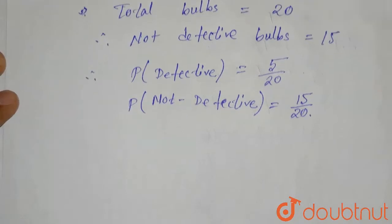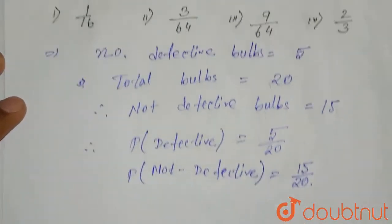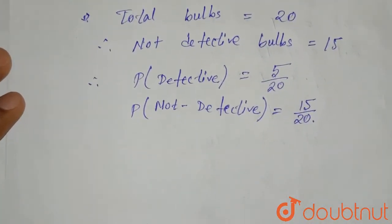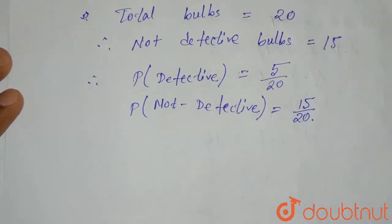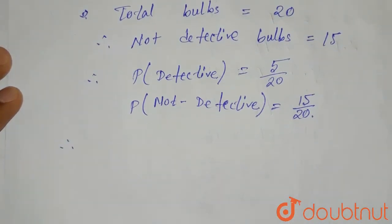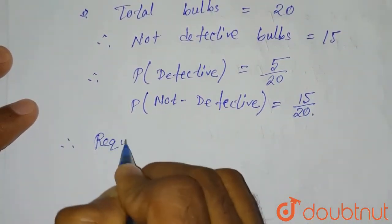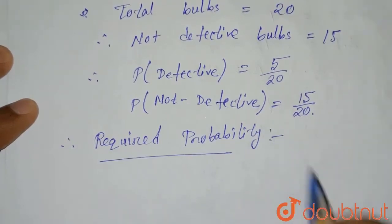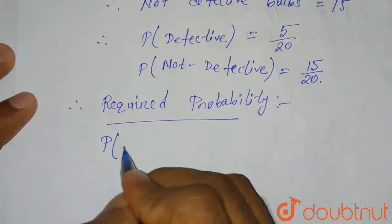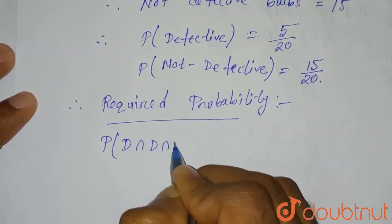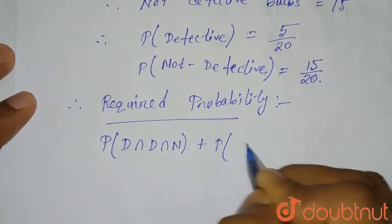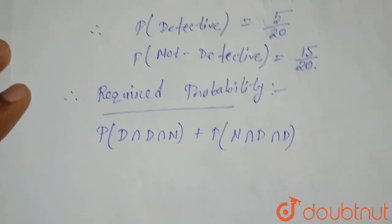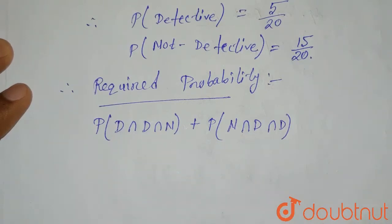We take three bulbs chosen at random and we have to find the probability that two out of three are defective. The required probability will be: probability of defective, defective, and non-defective; plus probability of non-defective, defective, defective; plus probability of defective, non-defective, defective. We are taking three trials out of which two have to be defective.